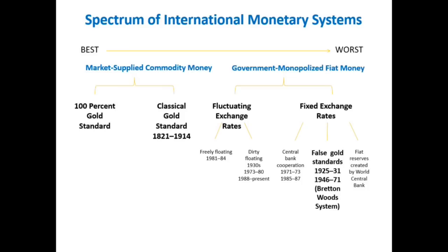Then we got a gold standard in which the government interfered to a greater or lesser extent, but it was still a genuine gold standard. That's the gold standard I will talk about today — that's the classical gold standard. So as you go from left to right, you go from the best systems to the worst systems.